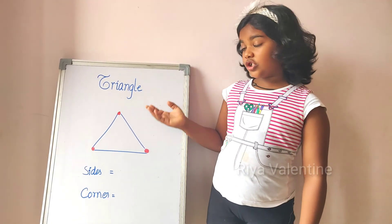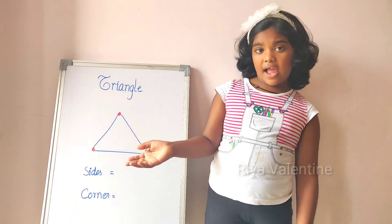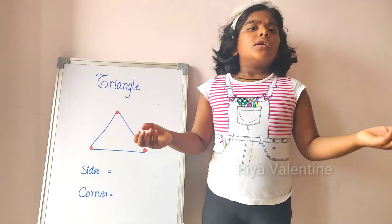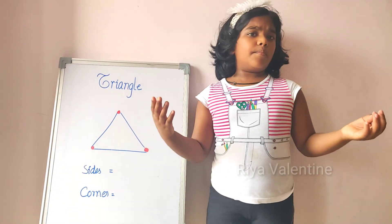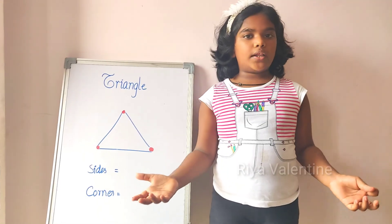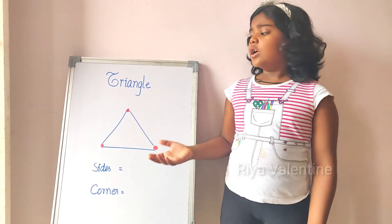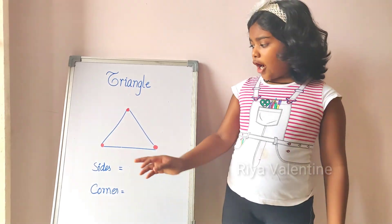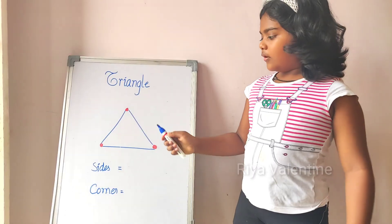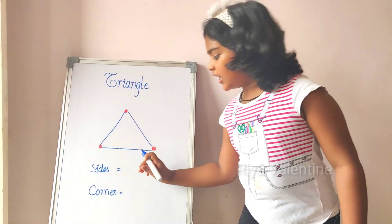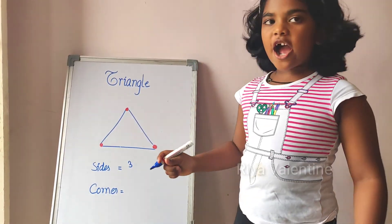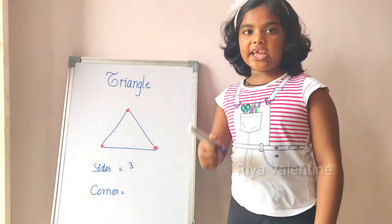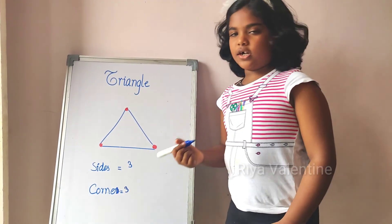So let's move to the triangle. Triangle has three sides and three corners. Sides may or may not be equal — that is a speciality of the triangle. Count with me: how many sides are here? One, two, three — three sides. And how many corners? One, two, three — three corners.